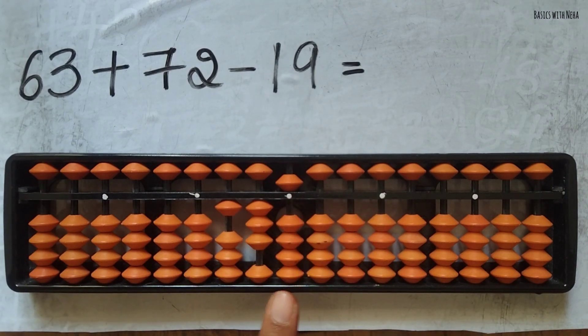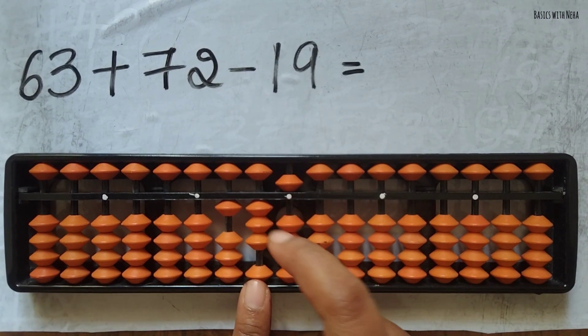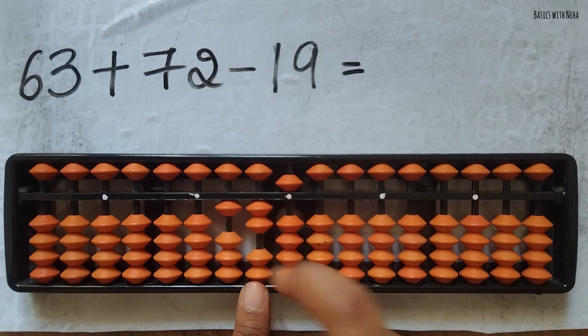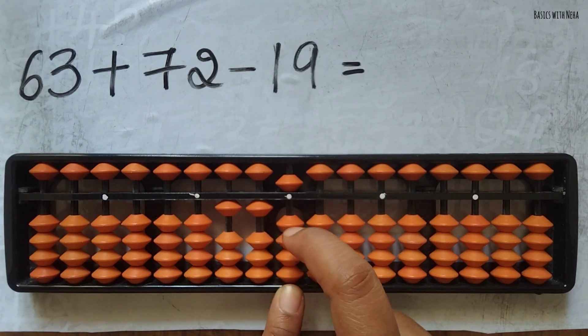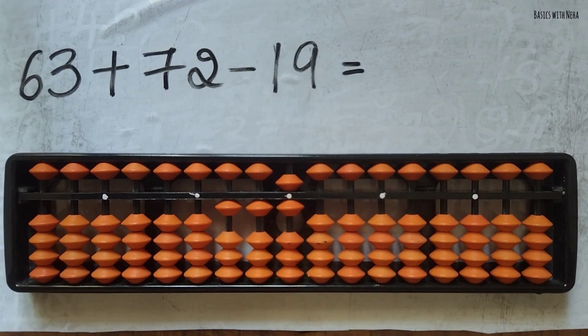Now minus 19. Minus 1 can be done directly, and to minus 9 here, it is minus 10 plus 1. So the answer to this question is 116.